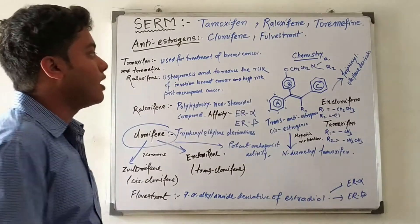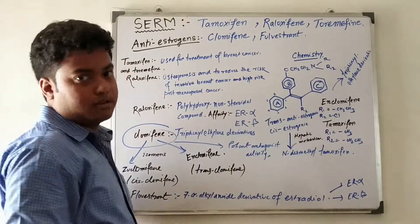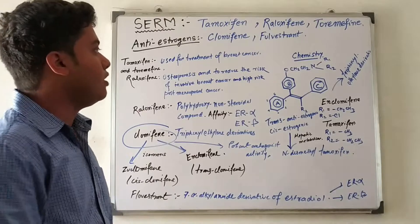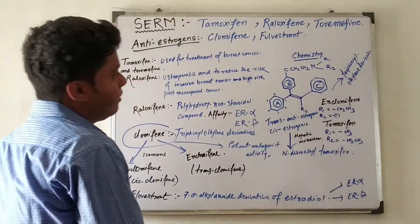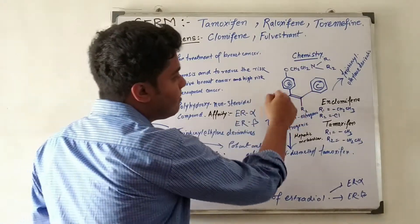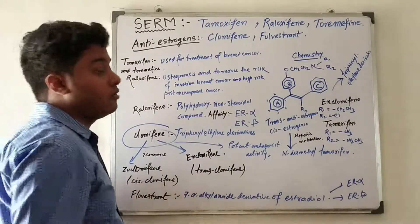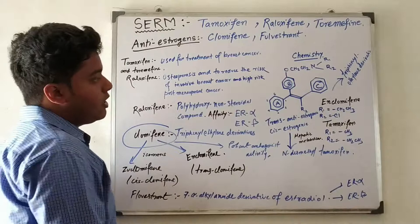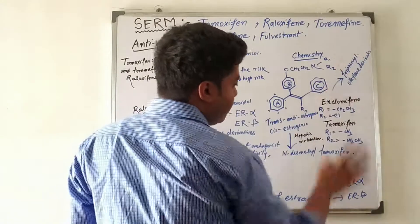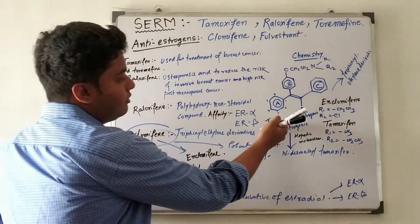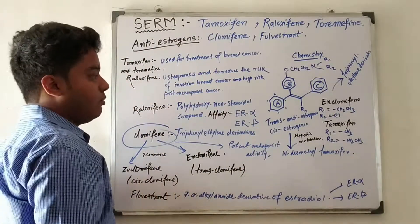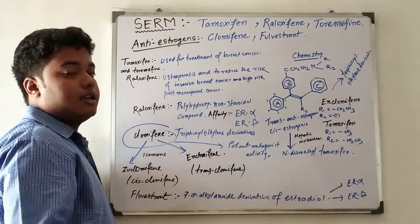In selective estrogen receptor modulators, the chemistry of the compound is a little bit complex, because the spatial arrangement of the groups in the form of cis and trans is very important. In the case of tamoxifen, we have a triphenylethylene moiety, and it is similar to the structure of non-steroidal compounds such as diethylstilbestrol. The trans and cis forms of tamoxifen and its congeners are very important for their estrogenic and anti-estrogenic properties.